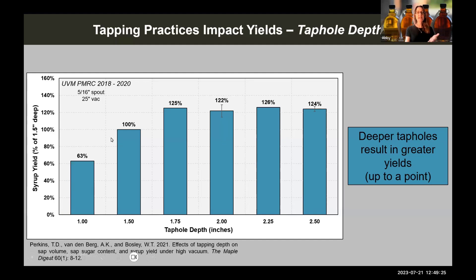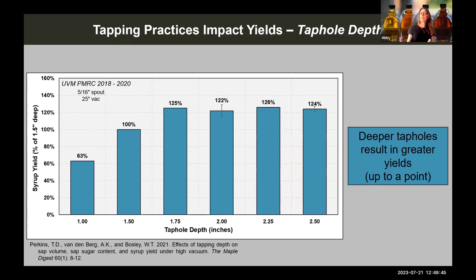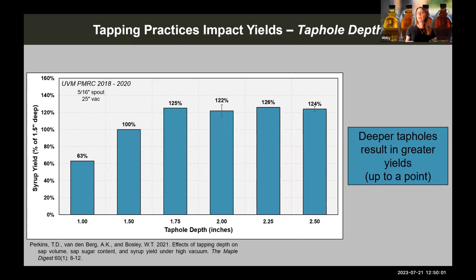Data are expressed as a percentage yield relative to a one-and-a-half-inch depth tap hole. A one-inch tap hole produced 63 percent of the syrup yield compared to one-and-a-half inches — a fairly substantial reduction. But increasing from one-and-a-half inches to one-and-three-quarters, two, or over two inches showed very little gain beyond the two-inch mark. There seems to be a plateau in how much more sap you're getting for deeper tap hole depths.